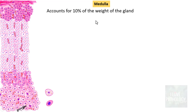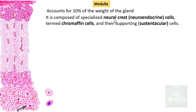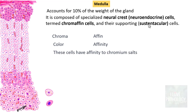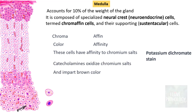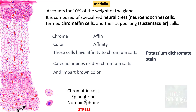The medulla accounts for around 10% of the weight of the adrenal gland. It is composed of specialized neural crest cells referred to as neuroendocrine cells, called chromaffin cells. 'Chroma' means colour, and 'affin' means affinity — these cells have affinity to chromium salts. When tissue is immersed in potassium dichromate solution, the catecholamines in these cells oxidize the chromium salts and impart a brown colour. That is why they are called chromaffin cells, and they secrete epinephrine and norepinephrine.